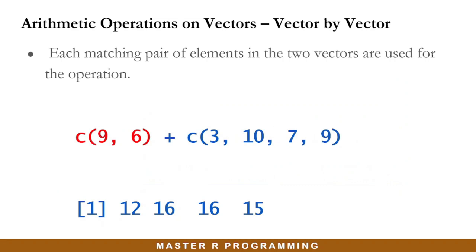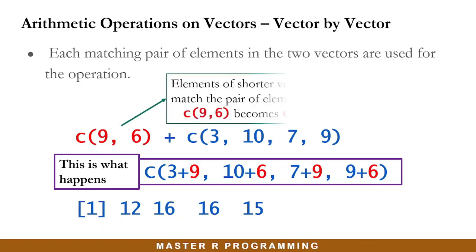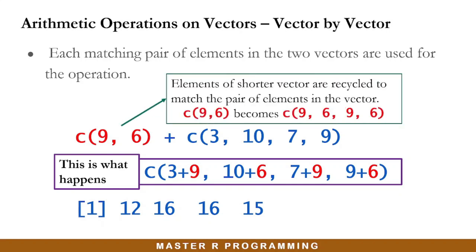This is another example where the first vector has two items and the second vector has four items. The elements in the shorter vector are recycled to match the pairs of elements in the second vector. Essentially, the first vector with elements 9 and 6 would be repeated to yield the corresponding length that matches the same number of elements in the second vector, and the calculation is performed and the result is displayed.